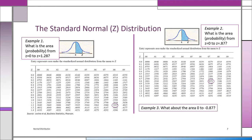Let's do another example: from 0 to 0.87. You go to row heading 0.8, then get the second decimal place from the column 0.07. Where they intersect is 0.87, and the answer is 0.3078 — so 30.78% of the area of the curve is between 0 and 0.87. By symmetry, from 0 to minus 0.87 is also 0.3078.